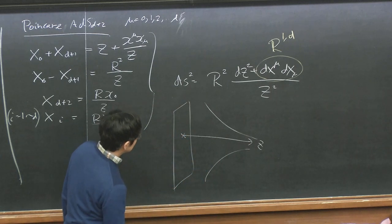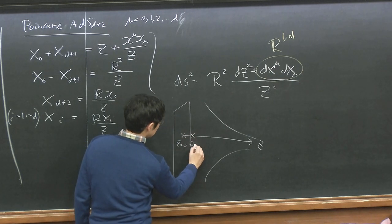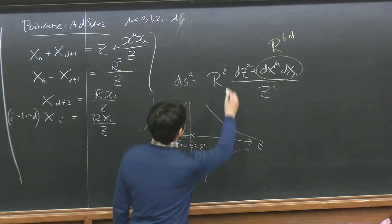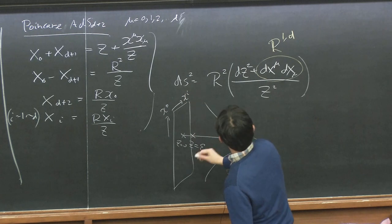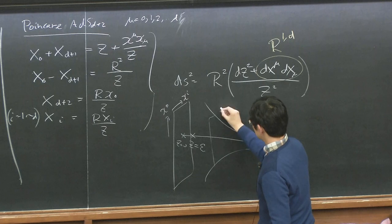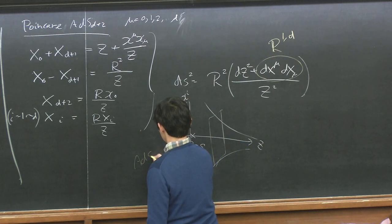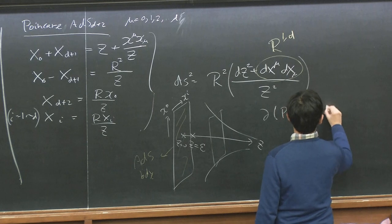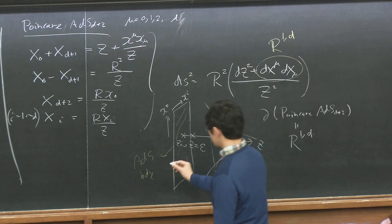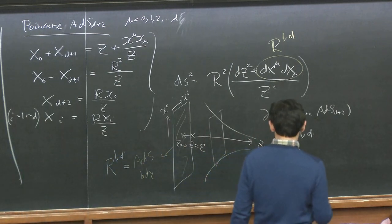At Z = 0 the metric is divergent, so we put a cutoff ε. The boundary of Poincaré ADS is R^{1,D}. These two — global ADS and Poincaré ADS — are the basic setups. However, Poincaré ADS covers only part of the full spacetime; we can embed the Poincaré patch as a wedge inside global ADS.